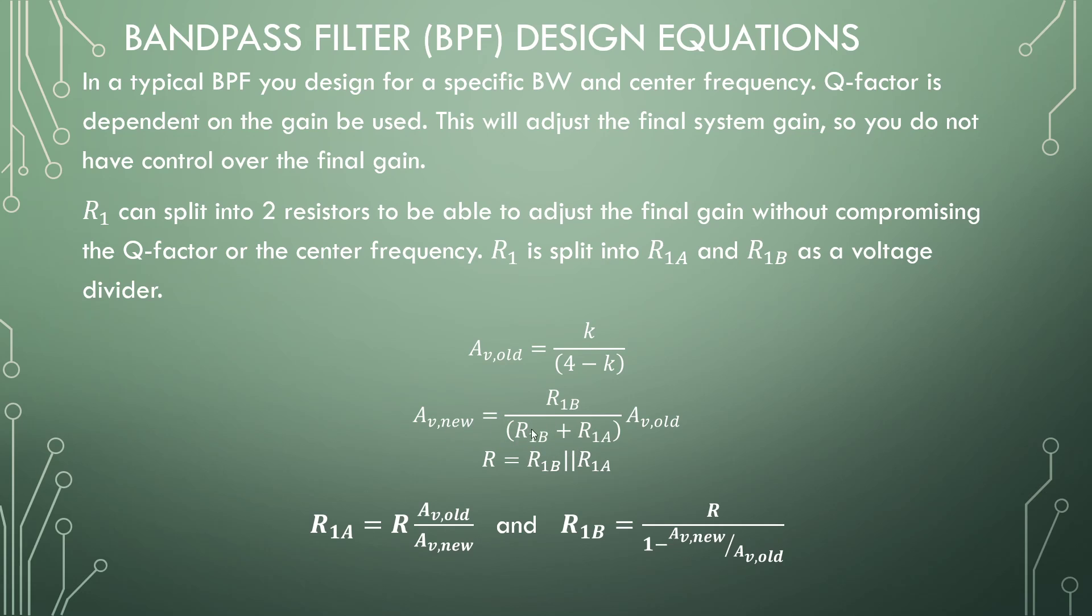So if we split these equations so that we have R1A alone and R1B alone, we have a resistor that we calculated for the frequency, old gain over the new gain, and then the resistor over 1 minus the new gain over the old gain, that's our resistor B. So you design for the Q-factor and the frequency like you did in the beginning, and then you just split the input resistor into two resistors designing for a new gain. So as long as the gain of the amplifier is greater than the gain that you want, you can do this using a voltage divider.